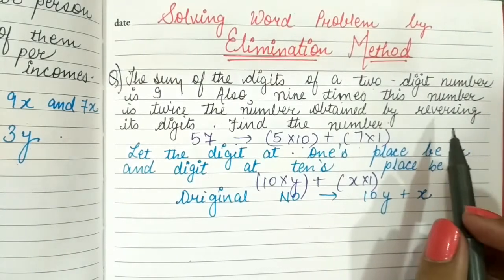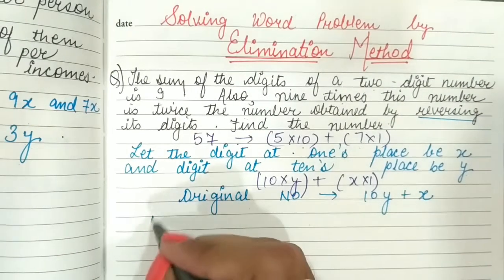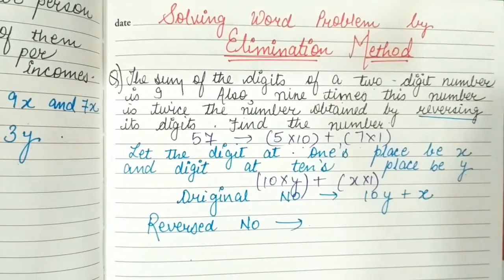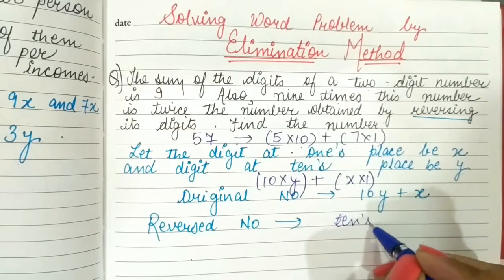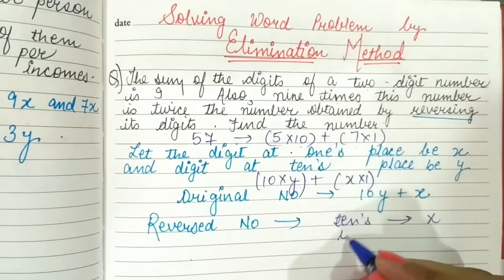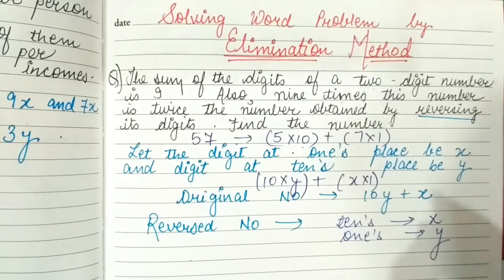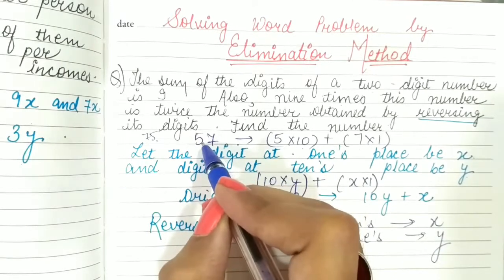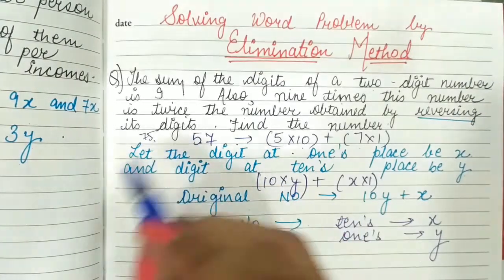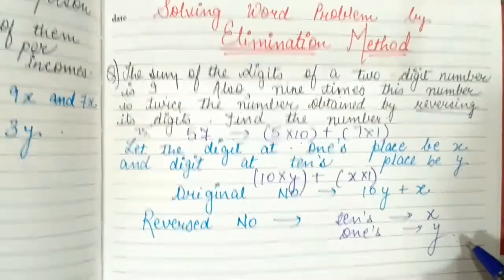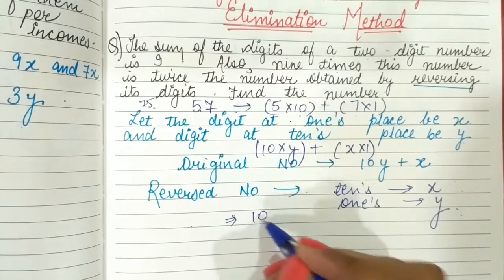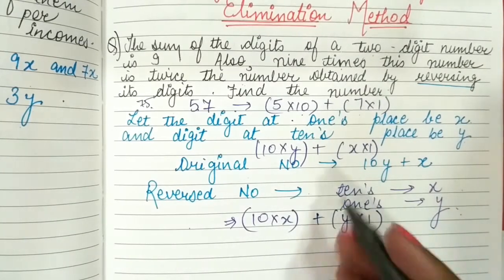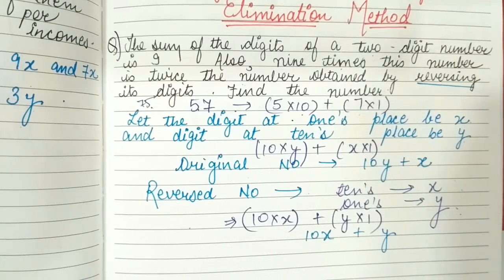The number obtained by reversing the digits: after reversing, the digit at the 10's place will be x and the digit at the 1's place will be y. For example, the reverse of 57 is 75 — the digit at the 10's place moves to 1's place and vice versa. So the reversed number is 10x plus y.